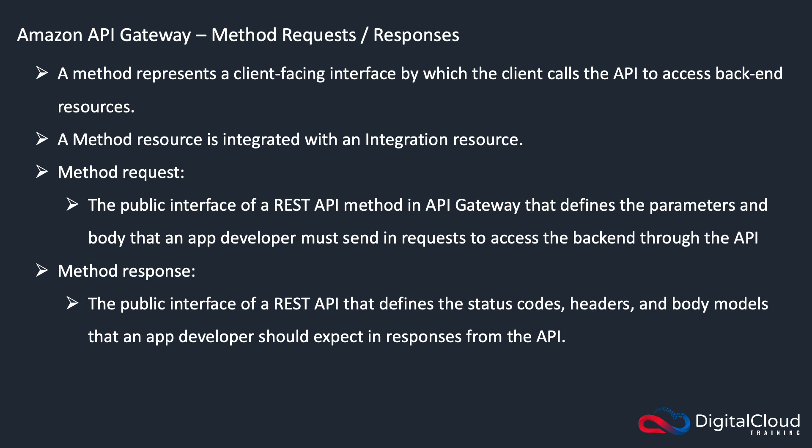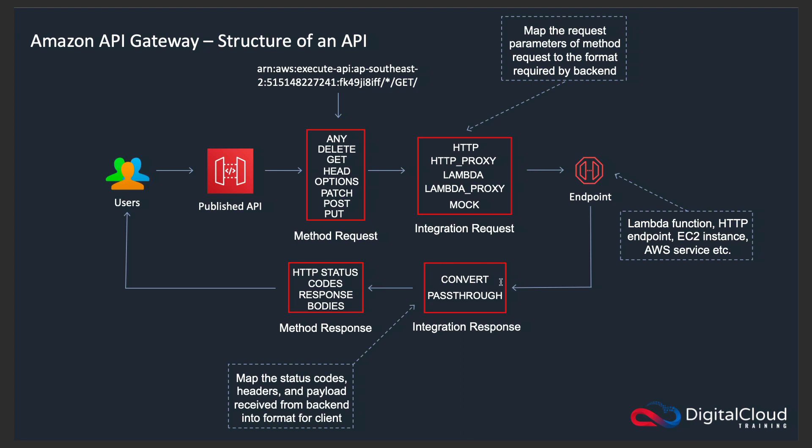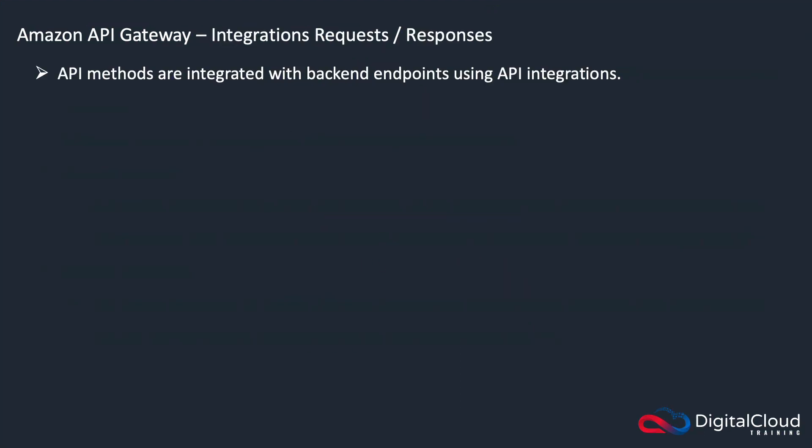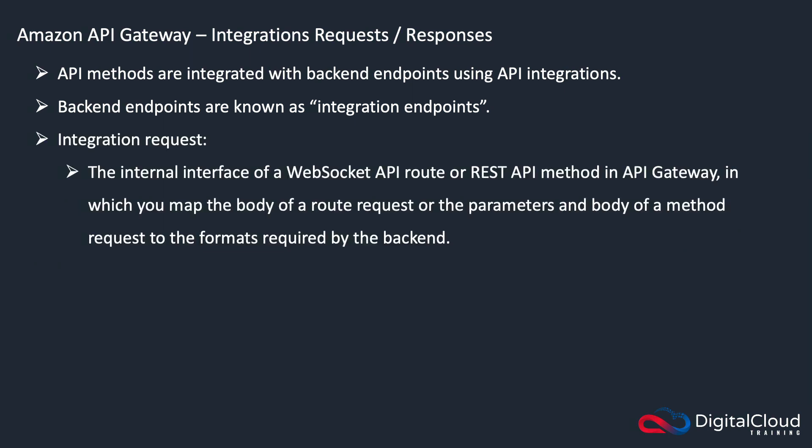Your method response is the public interface of a REST API that defines the status codes, headers, and body models that an app developer should expect in responses from the API. You've got your method request and your method response, then the integrations. API methods are integrated with backend endpoints using these integrations. The integration request is the internal interface, and that can be for a WebSocket API or a REST API. It's where you map the body of the route request or the body of a method request to the formats required by the backend.